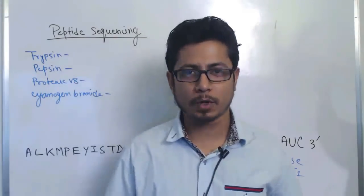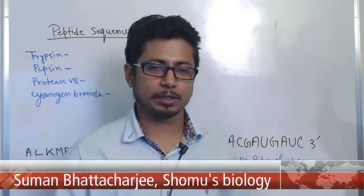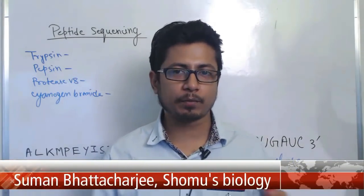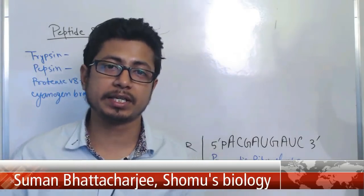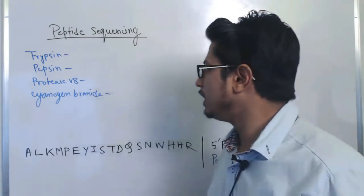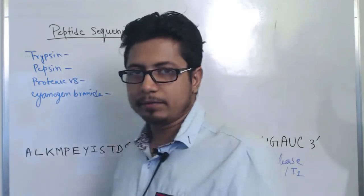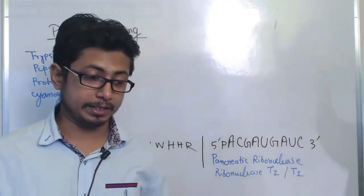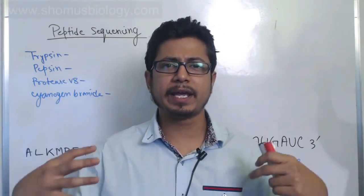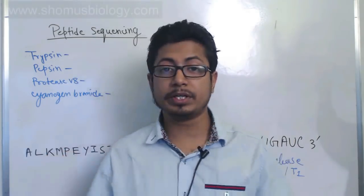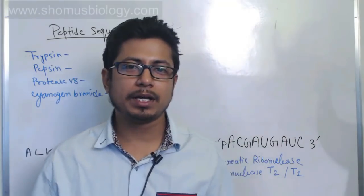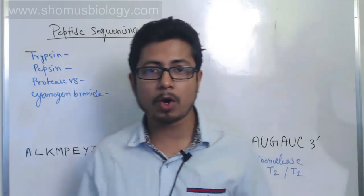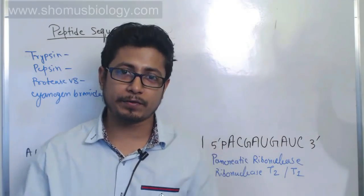Welcome back friends, welcome to another video tutorial from Shomus Balaji. In this lecture we want to solve one very important type of question which has been asked in the CSI NET exam almost every single year. That question is about peptide sequencing as well as nucleotide sequencing. They will give you a polypeptide sequence or a nucleotide/DNA sequence, and then ask about specific enzymes — in case of protein it's a protease, in case of RNA it's a ribonuclease — and ask how many fragments can be generated after treating that polypeptide or DNA or RNA.